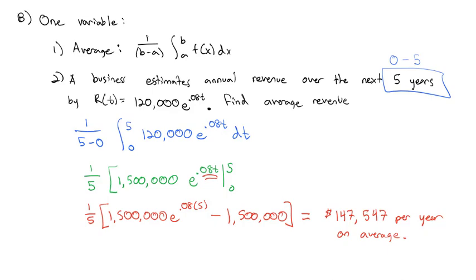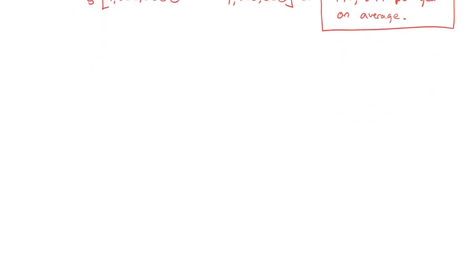That doesn't mean there's going to be $147,000 each year, because the first year is going to be smaller, the second year will be a little bigger, the third year even bigger, and the fourth and fifth years are going to be above that number. But on average, those five years will make $147,547. Now I mentioned we wanted to be able to find this average with multiple variables, so we're going to extend this same formula to two variables.